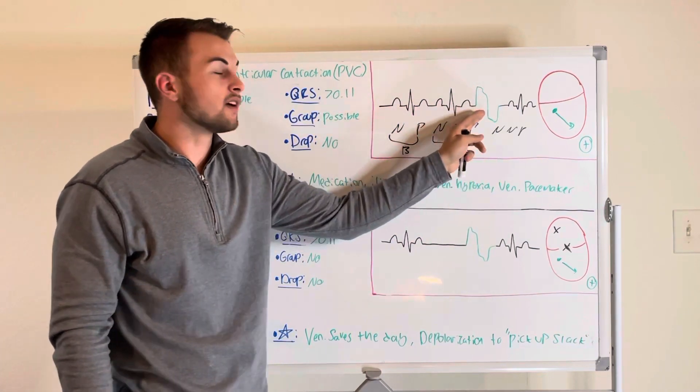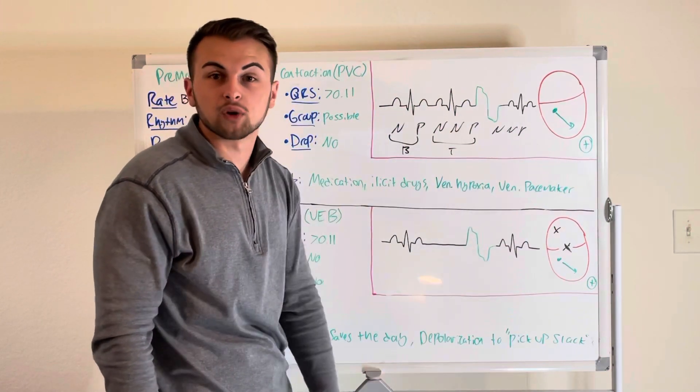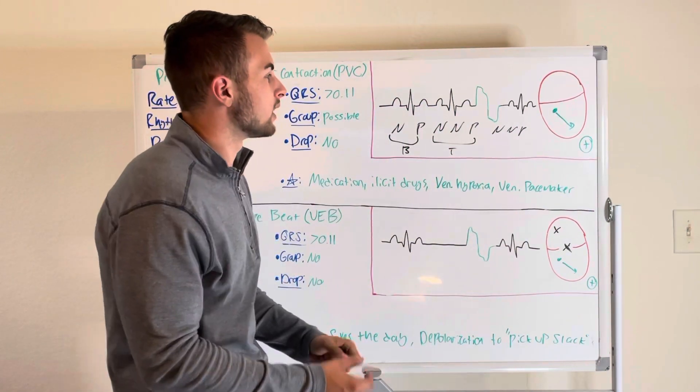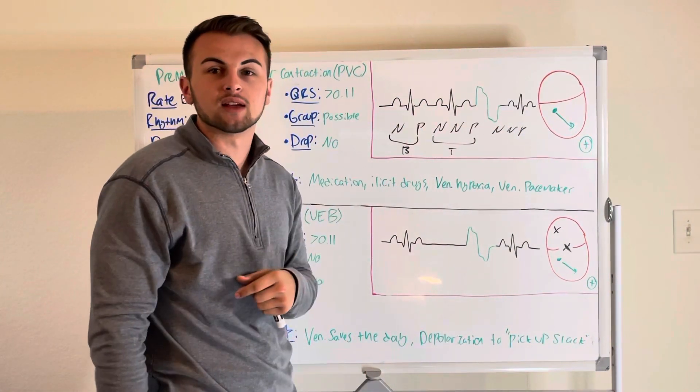The P wave in this PVC is absent, there's no PR interval, there's no P to QRS ratio, and the QRS complex is wide and bizarre looking. In fact it's more wide than 0.11 seconds.